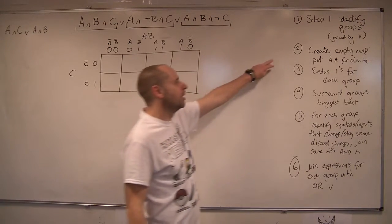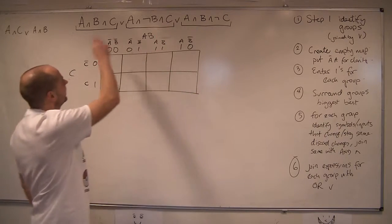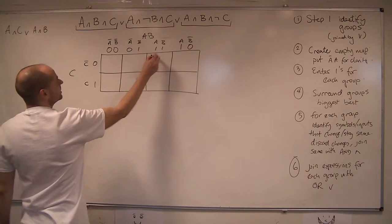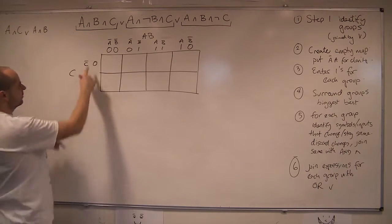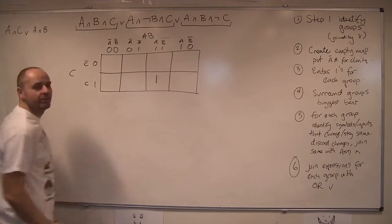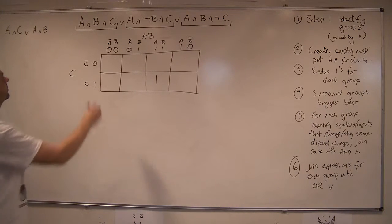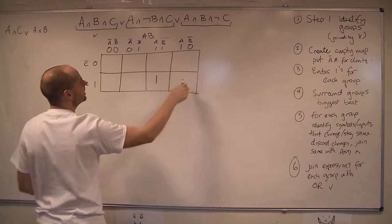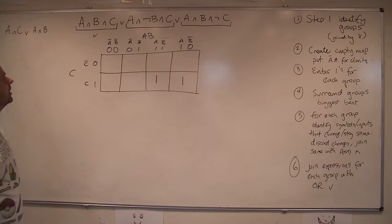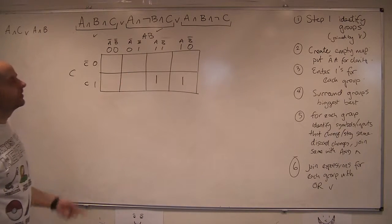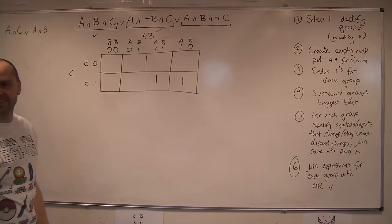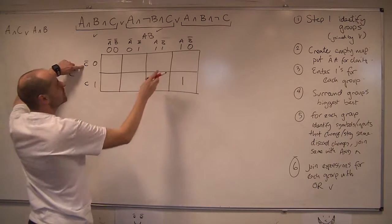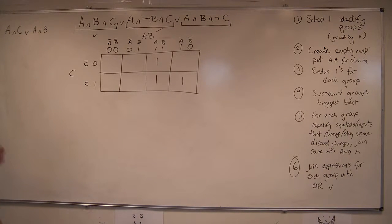Right, so that was step two, create the empty map. Now do step three, which is to enter the ones for each of these three groups that we've identified. So if we go for this one, we've got A and B. So that's this column and C. So if we look at this one, that is the normal C. So it is a one going in there. I'll tick that off so I've done it. Although if you do do it again, you should put it in the same place, but don't go over and start putting it in the wrong place. The next one is A and B, so that's here, and not C. So not C was that one. Okay, so that's the end of step three. We've done the groups.